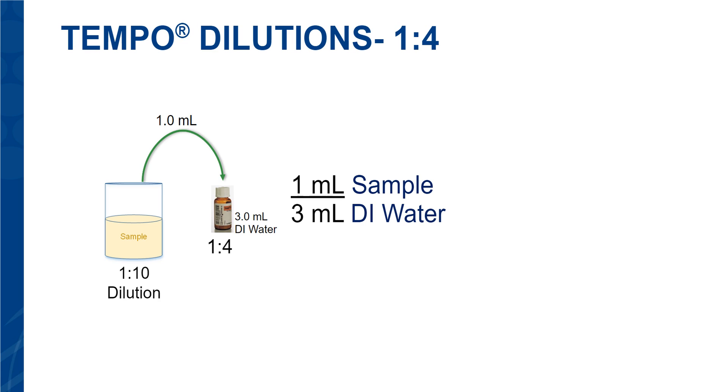We started with a 1 to 10 dilution of our sample. From our algebra courses, we know that when we mix dilutions, we multiply them. So, 1 to 4 times 1 to 10 will equal 1 to 40. We input that into the tempo prep area, and that will allow an enumeration range of 10 CFUs to 49,000 CFUs.